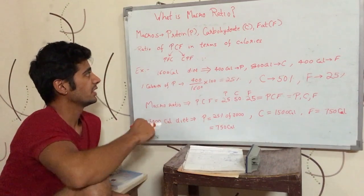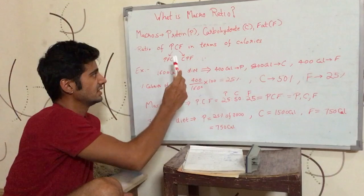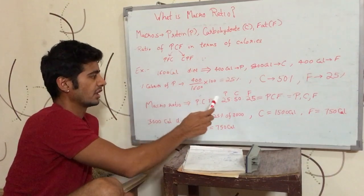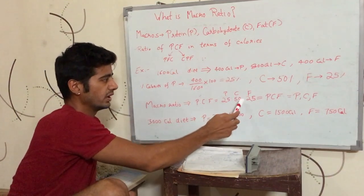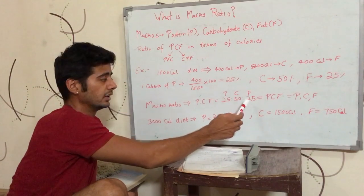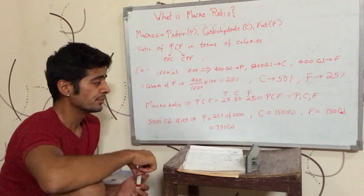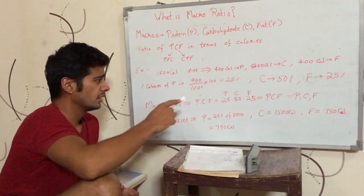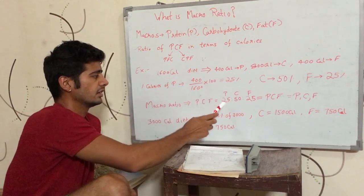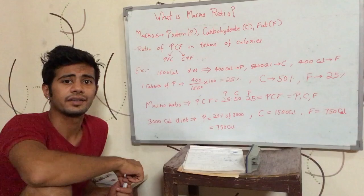But just remember that if you are expressing PFC, then you would be writing 25, 25 and 50 because the fat will come in the same place in PFC notation. So, on the 1600 calorie diet, the PCF ratio was 25, 50, 25.